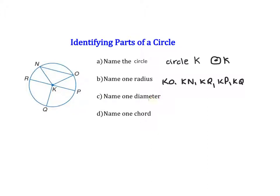Now name one diameter. Remember, a diameter must touch two parts of your circle and also has to go through the center. There's only one diameter here, and that's RP. Then name one chord. NO is a chord because it has two endpoints on our circle. But we could also say that RP is a chord — so RP is both a chord and a diameter.